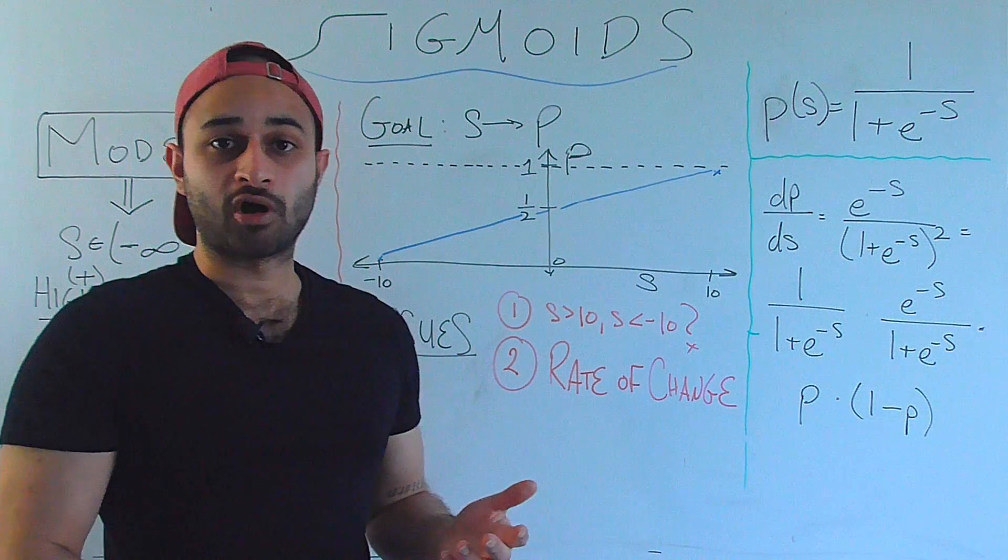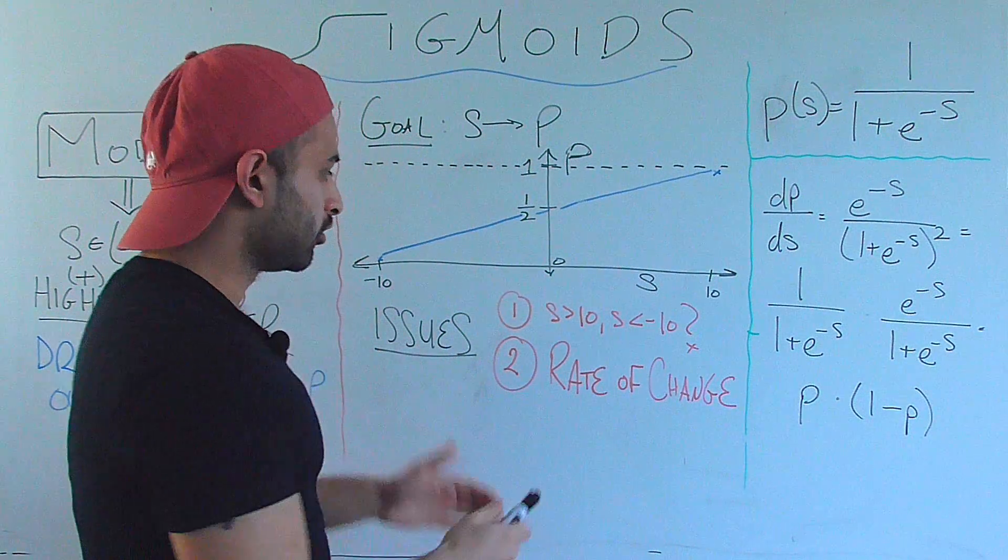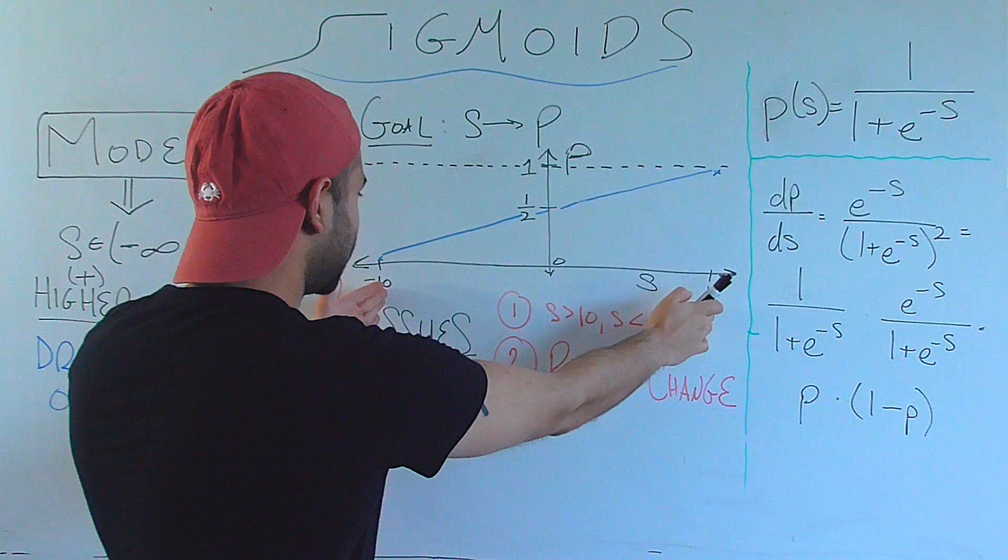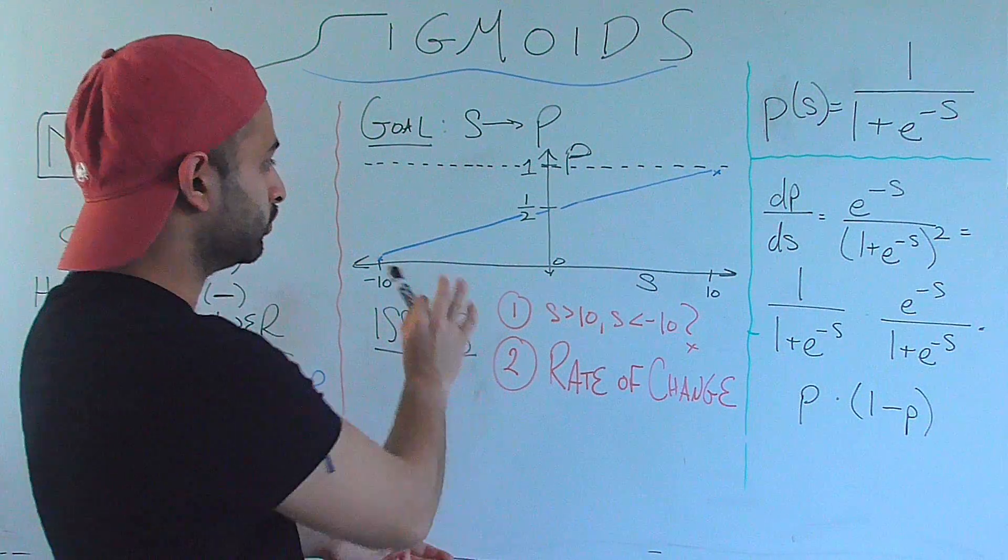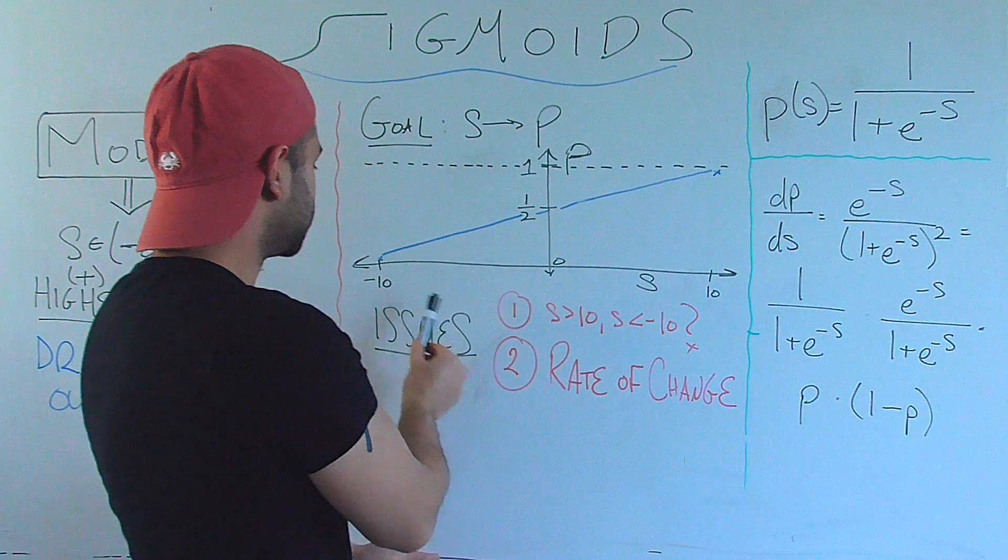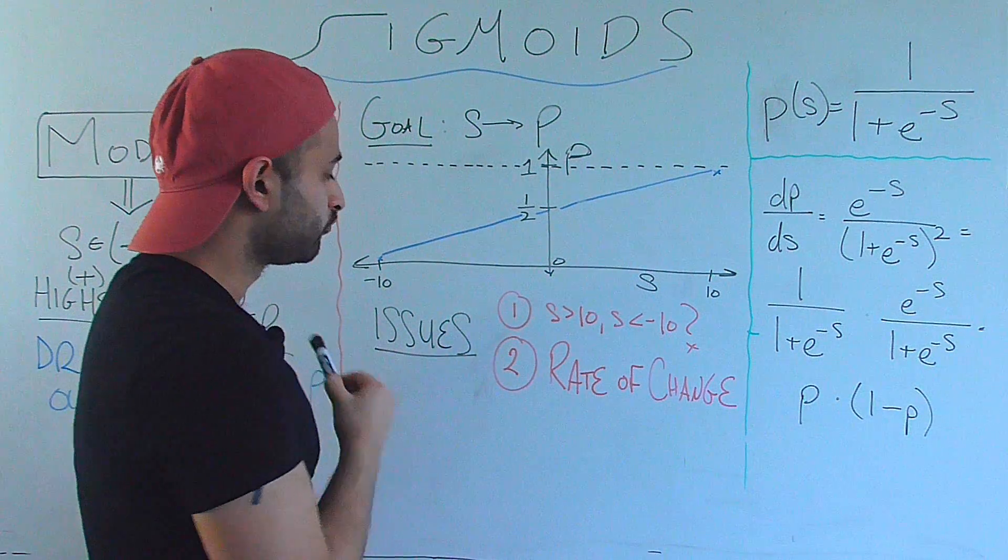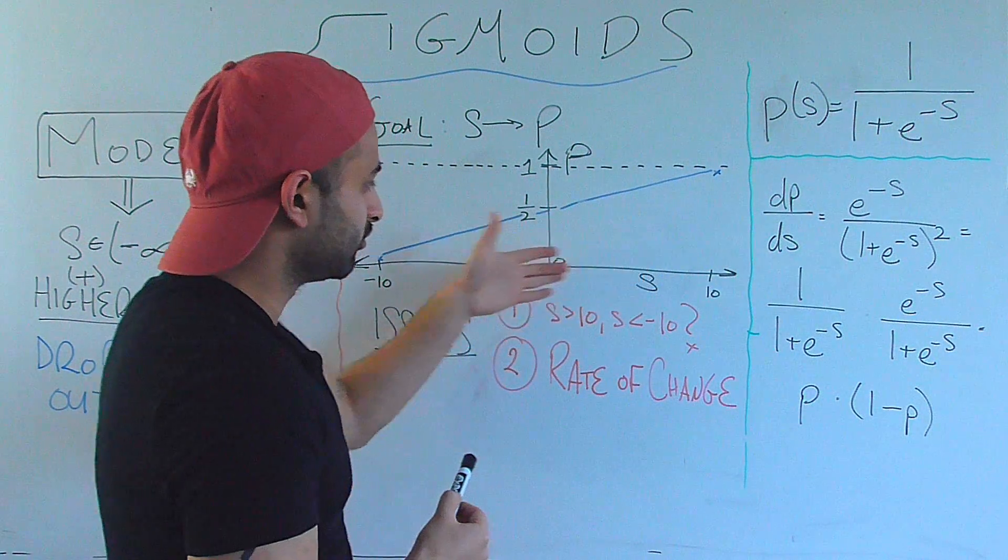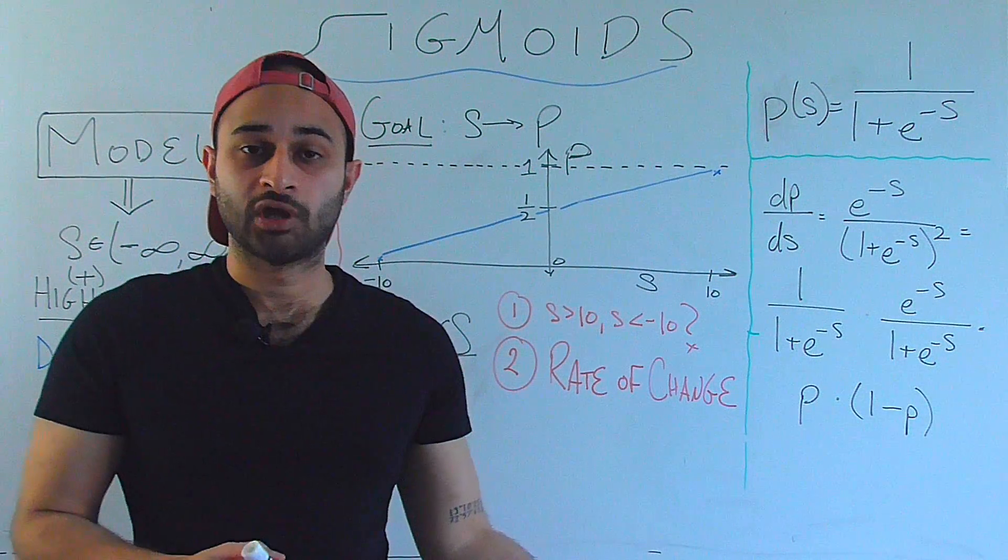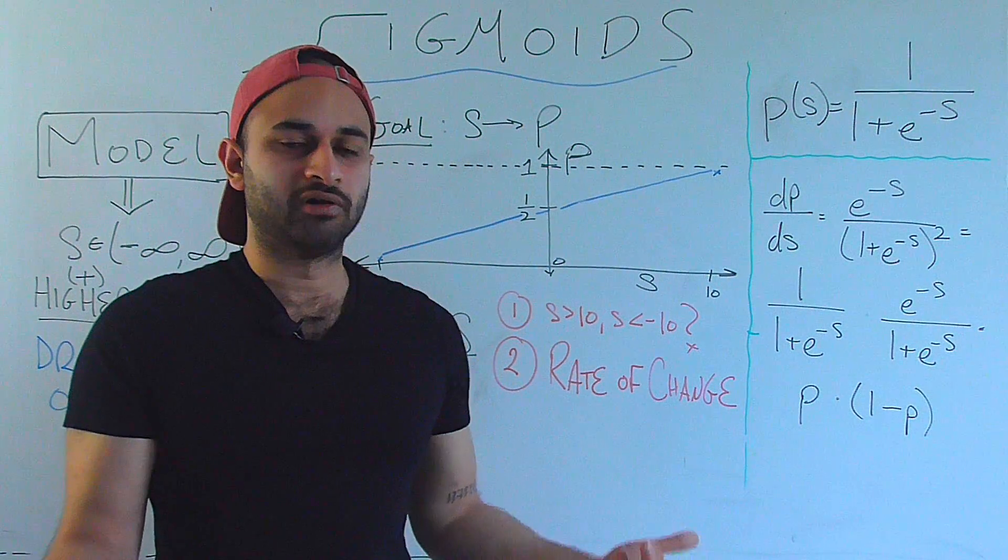So let's say when we train our model, our scores are between negative 10 and 10. So our goal is to map this range between negative 10 and 10 to the range 0 to 1. And the easiest thing would be just draw this blue line that I've drawn. So the student who has a negative 10 score, that gets mapped to 0, and the student who got a positive 10 score gets mapped to 1, and anything in between just gets mapped linearly.